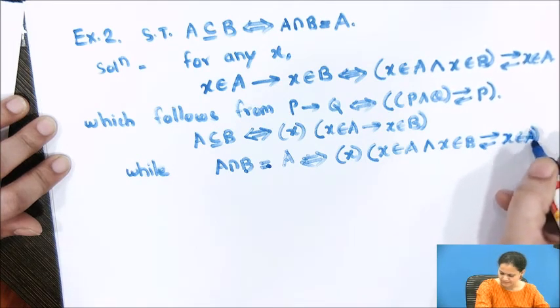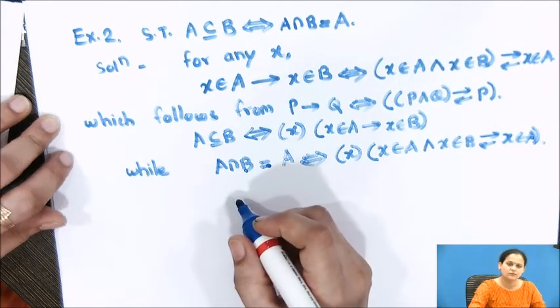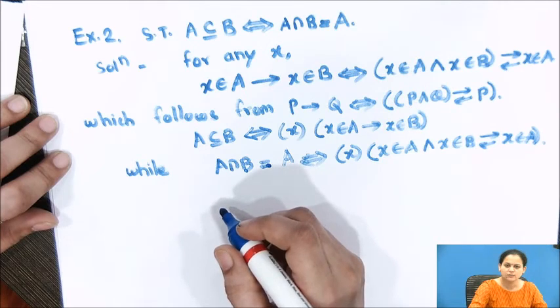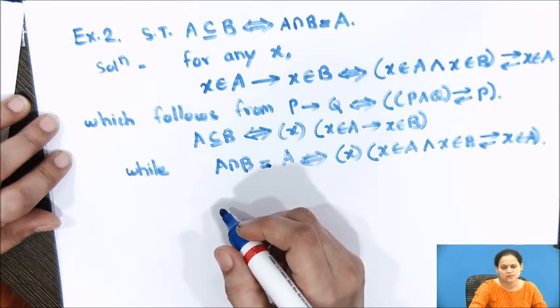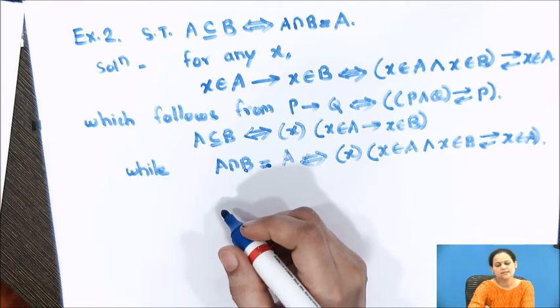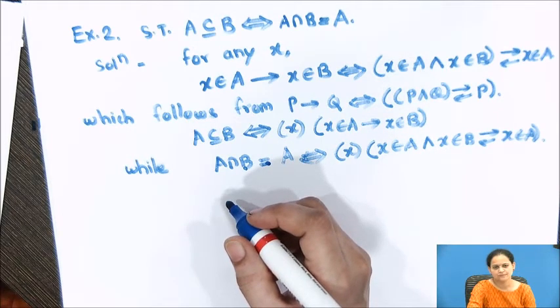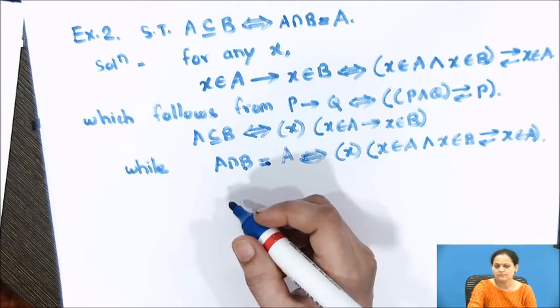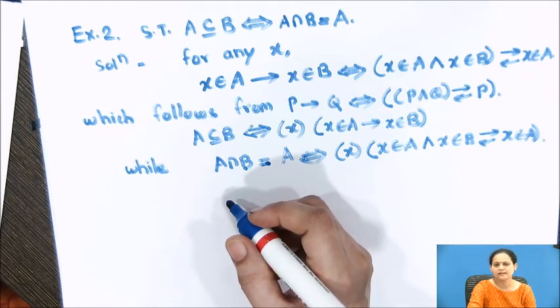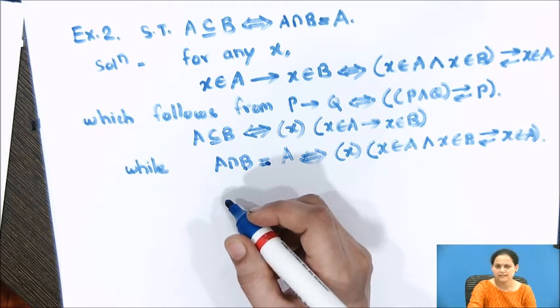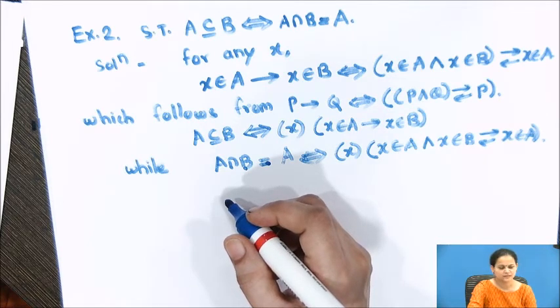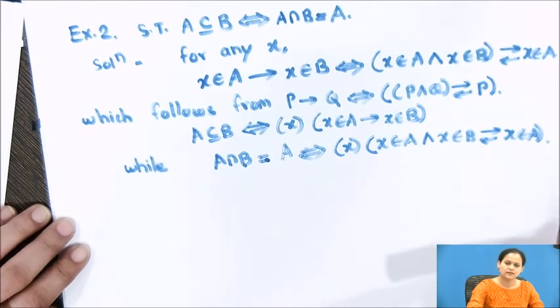It is equivalent to A, and x belongs to B is biconditional x belongs to A, and x belongs to B. We have assumed this from the property that p conditional q is equivalent to p and q biconditional p. Hence we have shown that if A is a subset of B, it is equivalent to saying if you take intersection of A and B, it simply results in the same set A itself. So with this we move on to the next example.